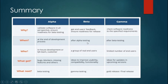Regarding timing: alpha testing is done at the end of the development process; beta testing is done only after alpha testing is complete; gamma testing is done only after beta testing is complete. For responsibility: the development or QA team performs alpha testing; a group of real end users performs beta testing; and a limited number of end users performs gamma testing.